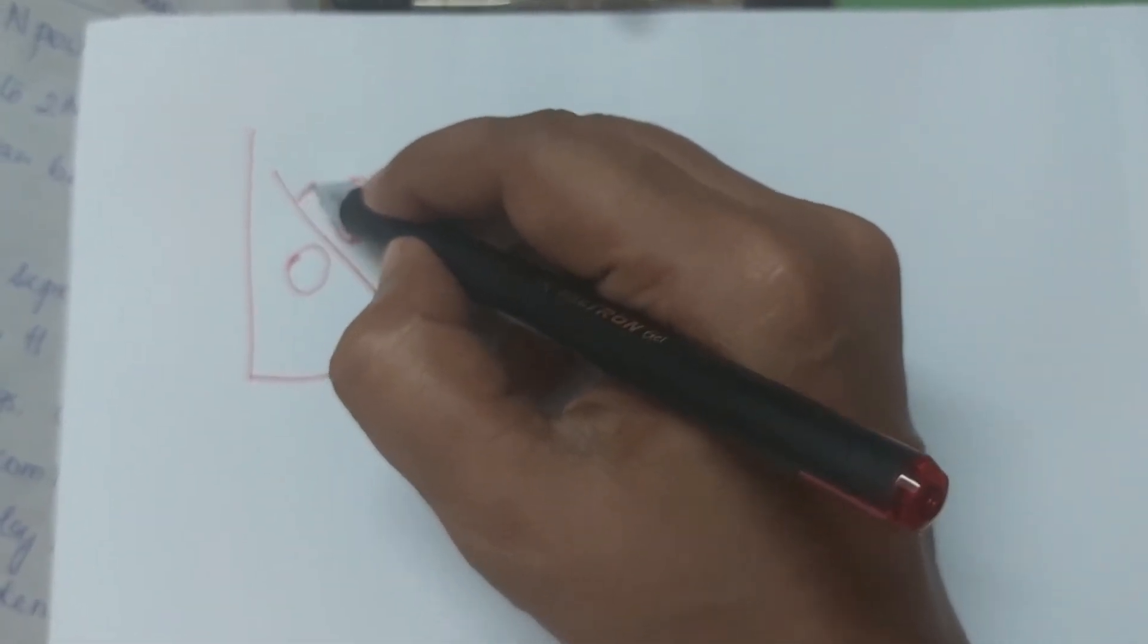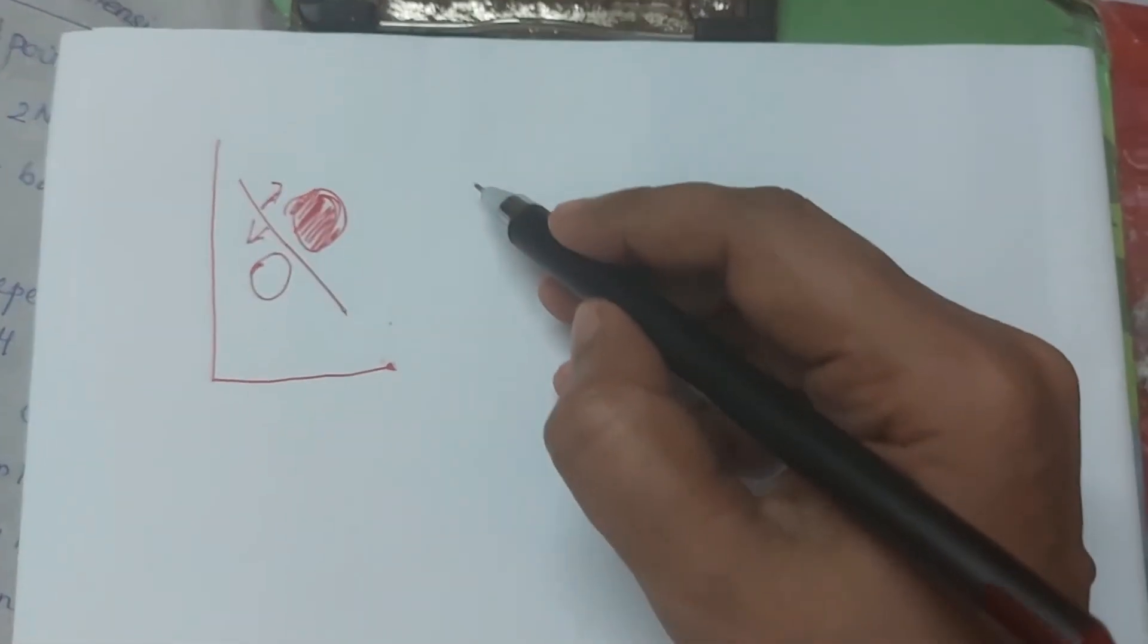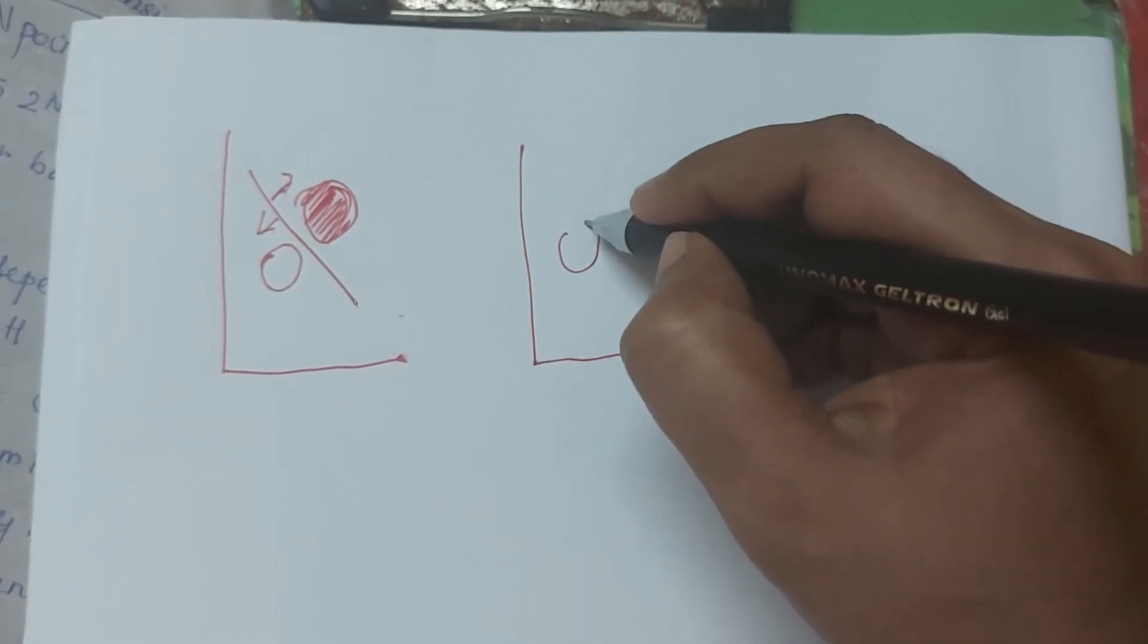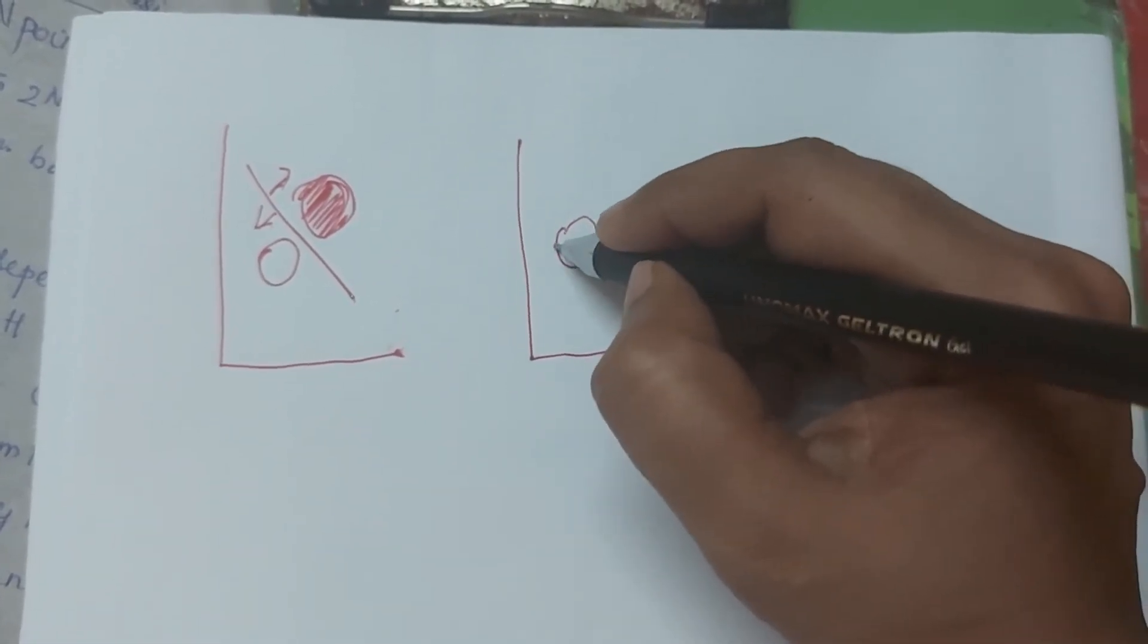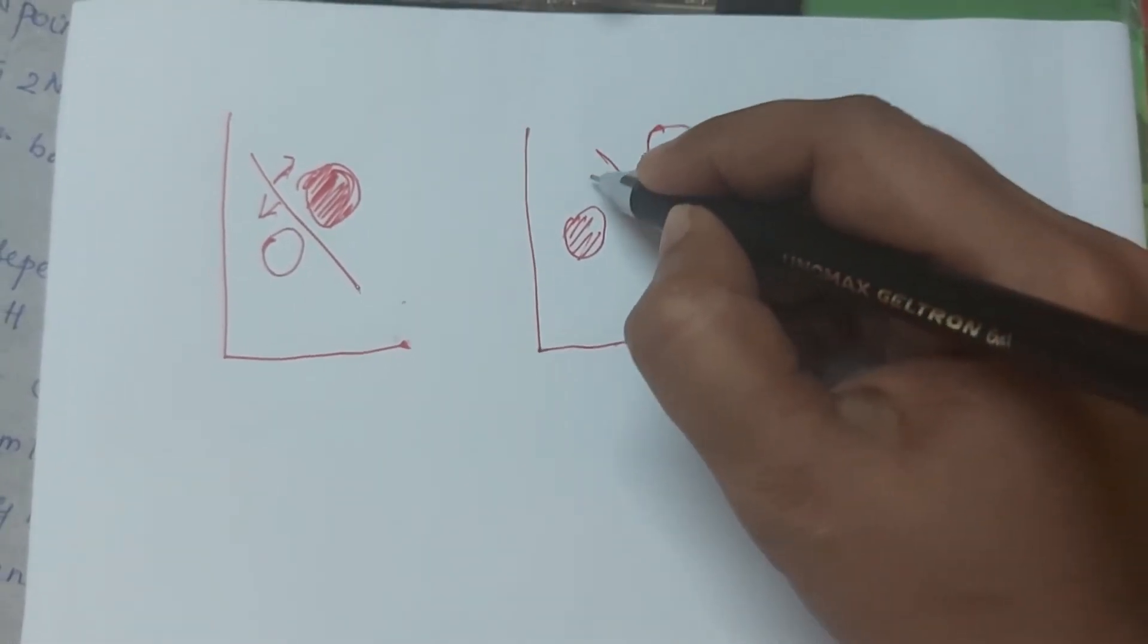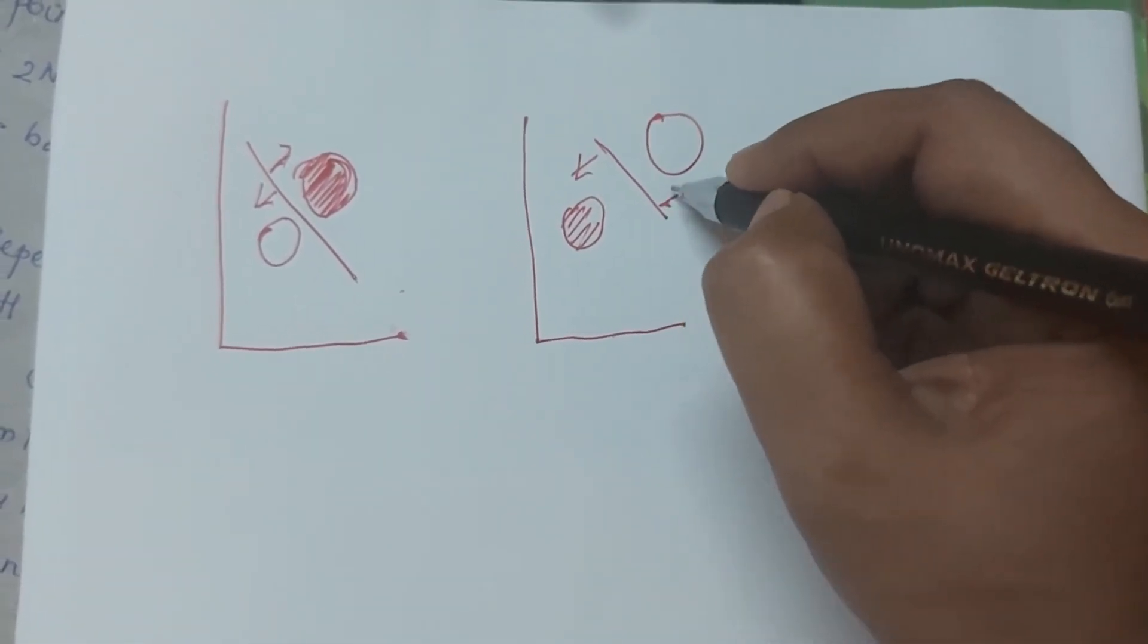We have to scatter this. To clarify, this line is negative. This line is negative. This is positive. We have to scatter this.